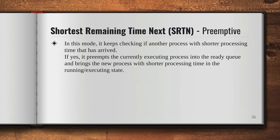In this mode, the criteria is that it keeps checking if another process with shorter processing time has arrived. If another process has arrived which has a shorter burst time or processing time, then it preempts the currently executing process, moves it into the ready queue, and brings the new process with shorter processing time into the running state.